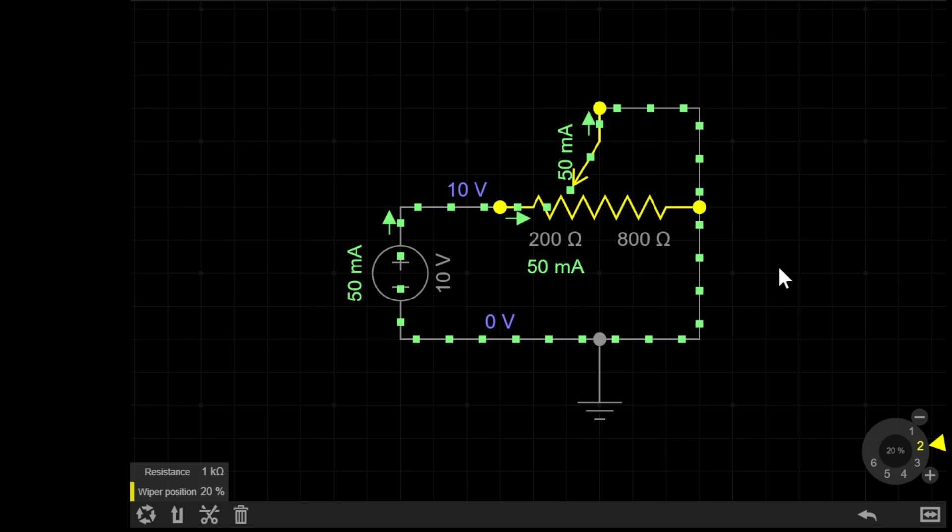By this point, you might be wondering why the potentiometer has three legs, given we just connect these two together on one side. Well, the main reason is that in the real world, when the wiper moves across, sometimes as it's moving, there are small amounts of dust and grit that can get caught between the wiper and the resistive element.